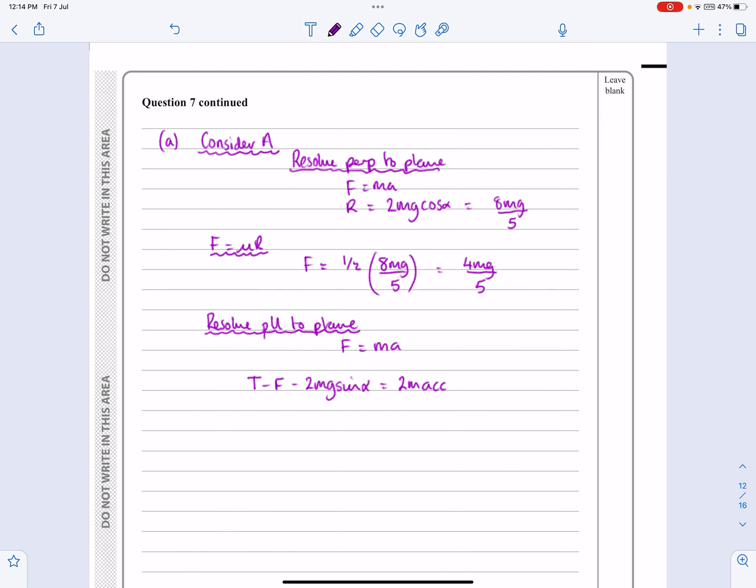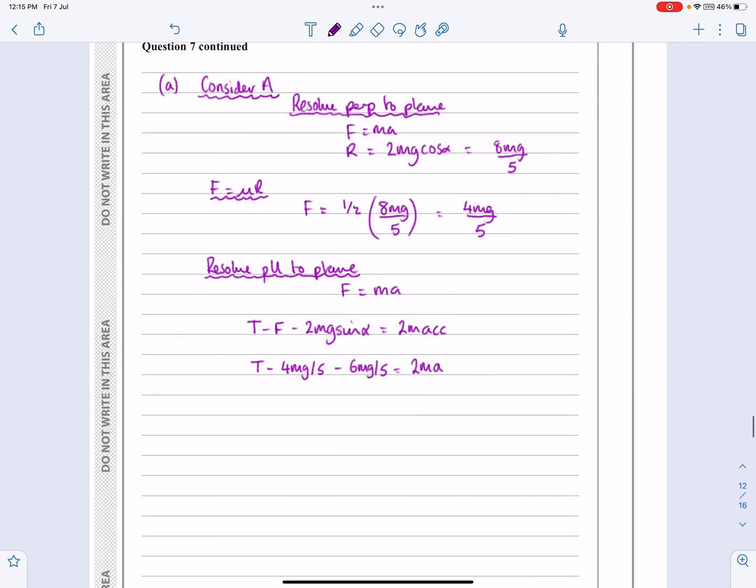So going back to that one then, this is where now, the idea of having the acceleration put on the diagram shows me, that when I'm trying to do F equals ma, I know that this way, those forces are overcoming those forces. So when I'm doing my F equals ma, I know that T is going to be bigger than the F and the 2mg sine. So when I work that out, I'm going to say, T minus F minus 2mg sin α, is equal to mass times acceleration, which is 2m times acceleration.